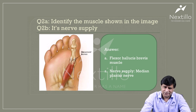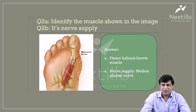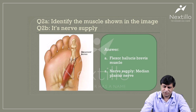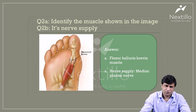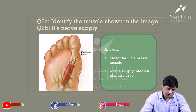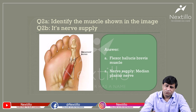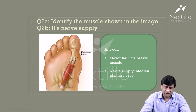This muscle covers the plantar surface of the first metatarsal. It has two heads of origin — a lateral head and a medial head. The medial head has a morphological significance: it is supposed to be a continuation of the tibialis posterior, which has a wide insertion among the tarsal bones except the talus, and the middle three metatarsals.